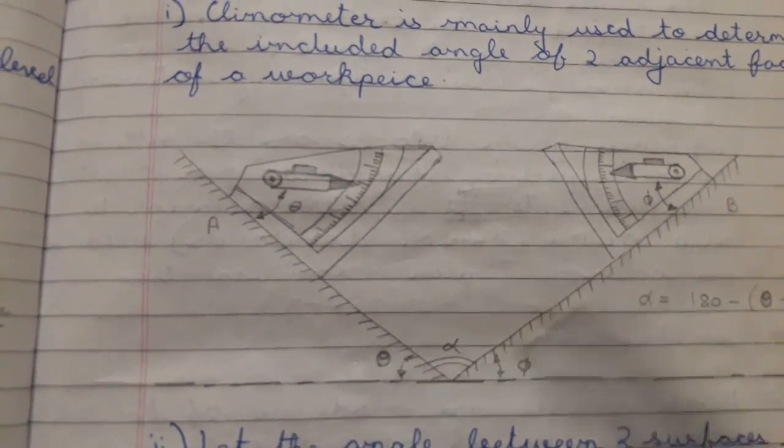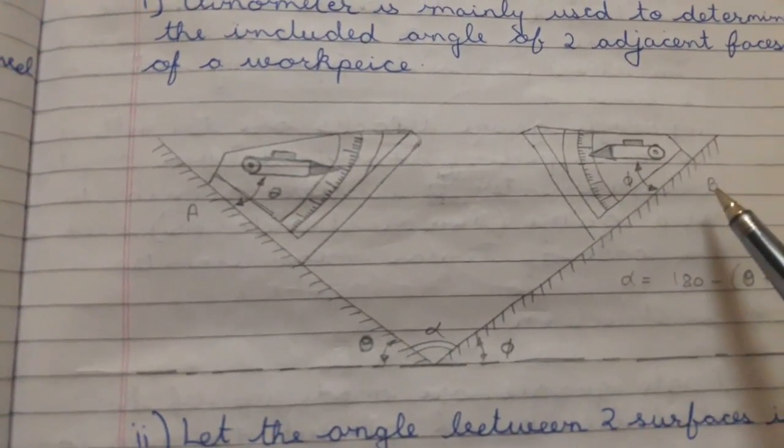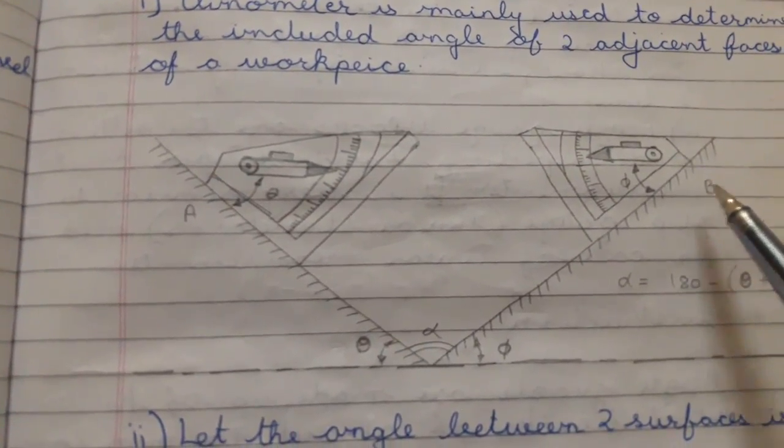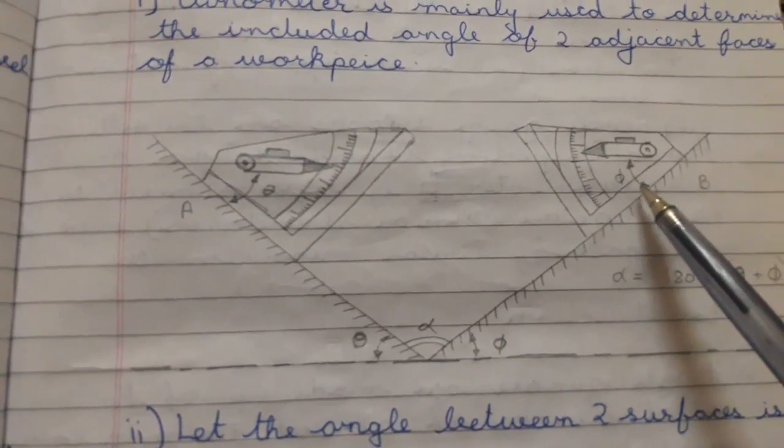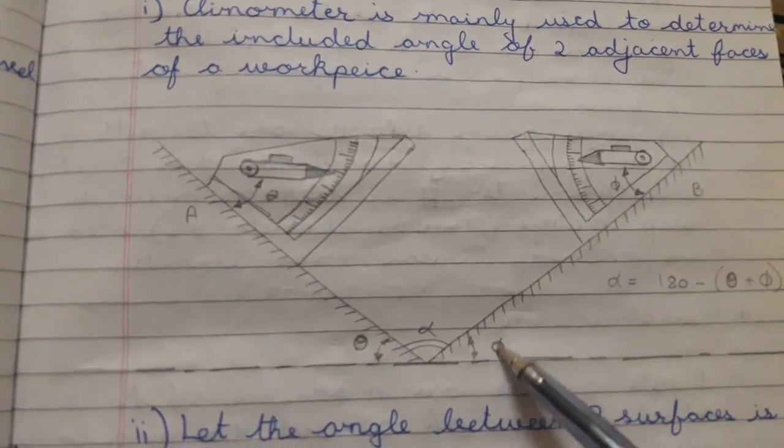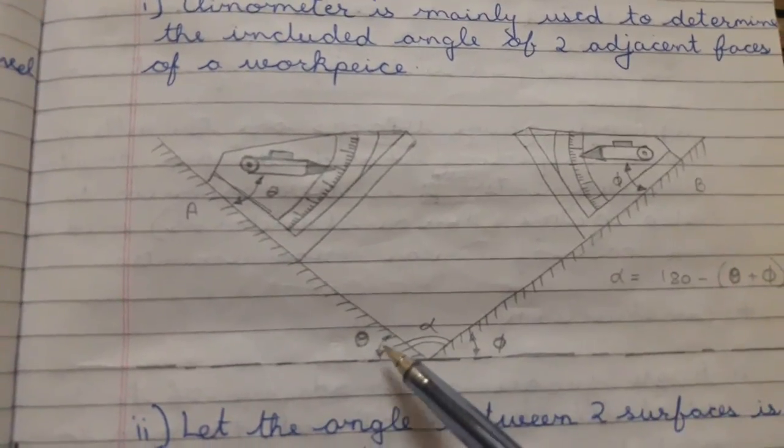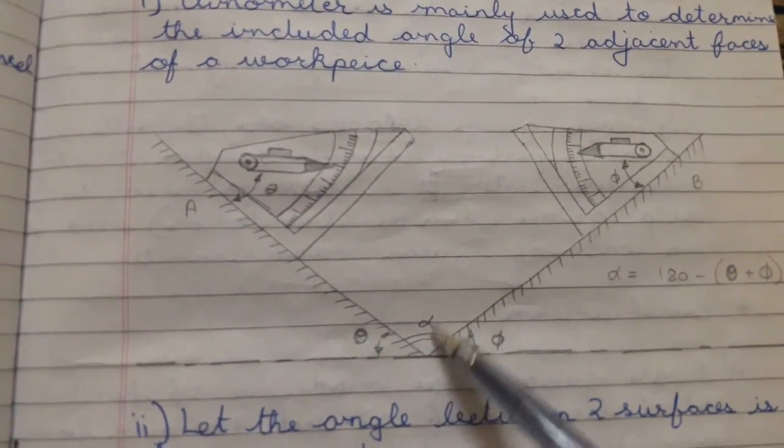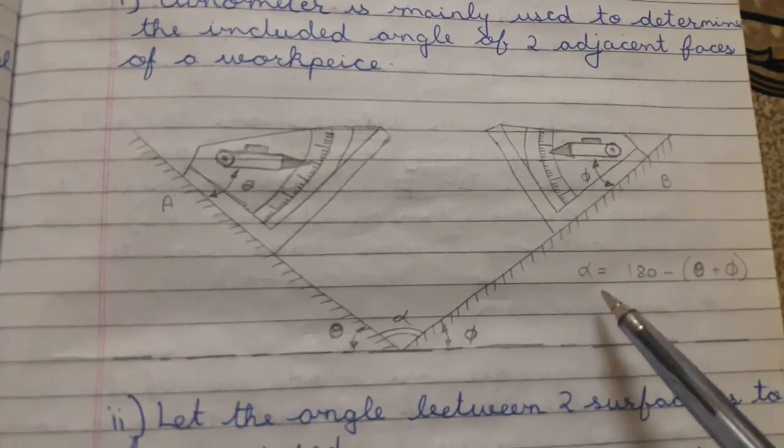Then, place the Clinometer on surface B and repeat the process to get angle phi. Once we get this phi, this phi will be equal to this angle. Now we have theta and phi. To find the included angle, we have to use the formula.